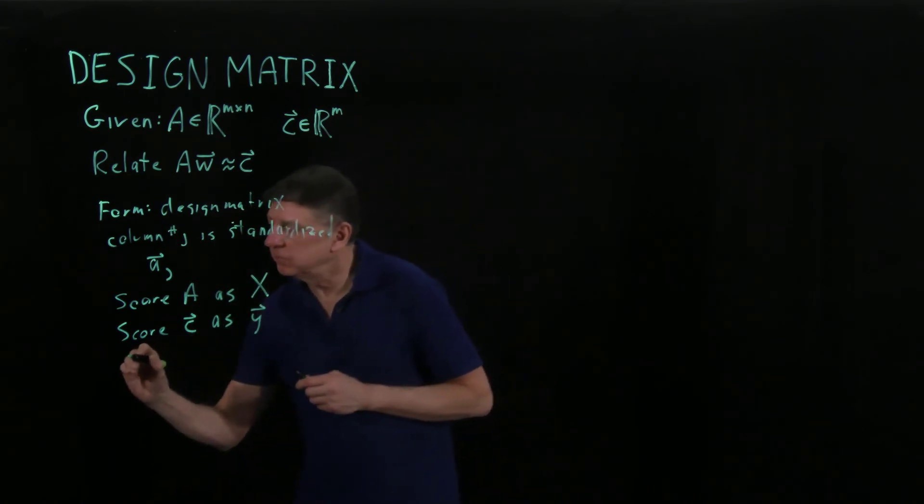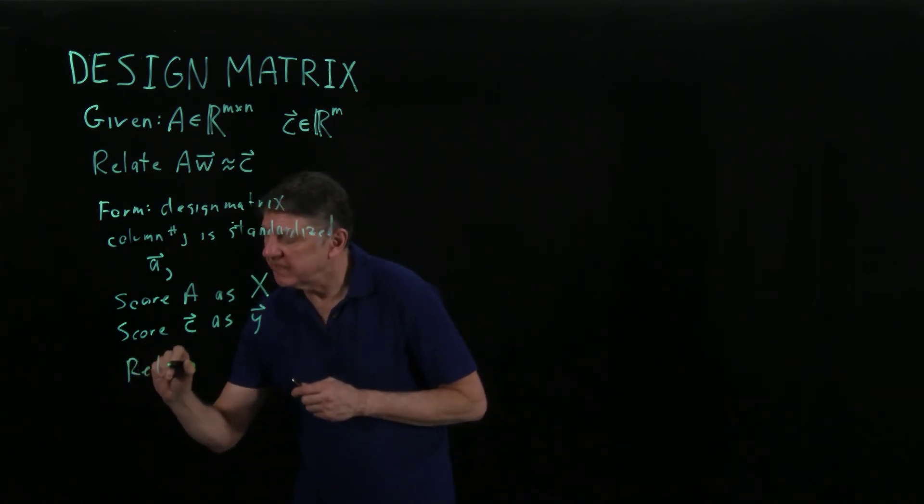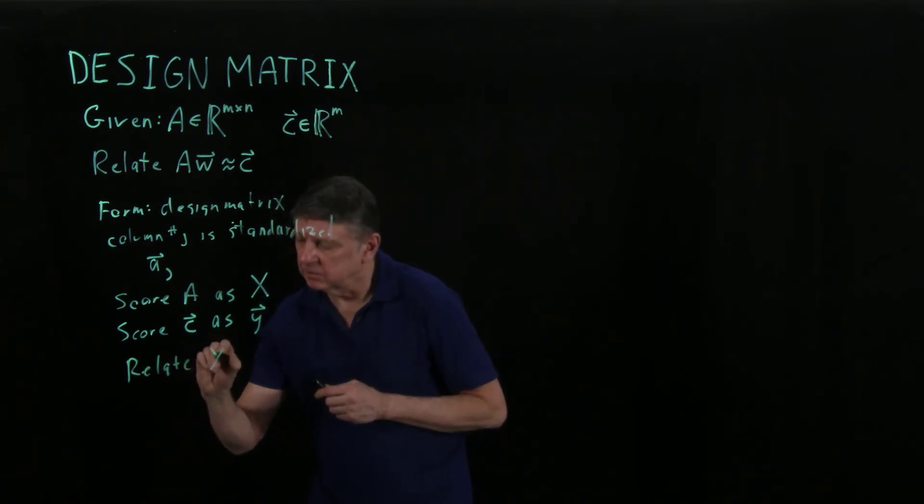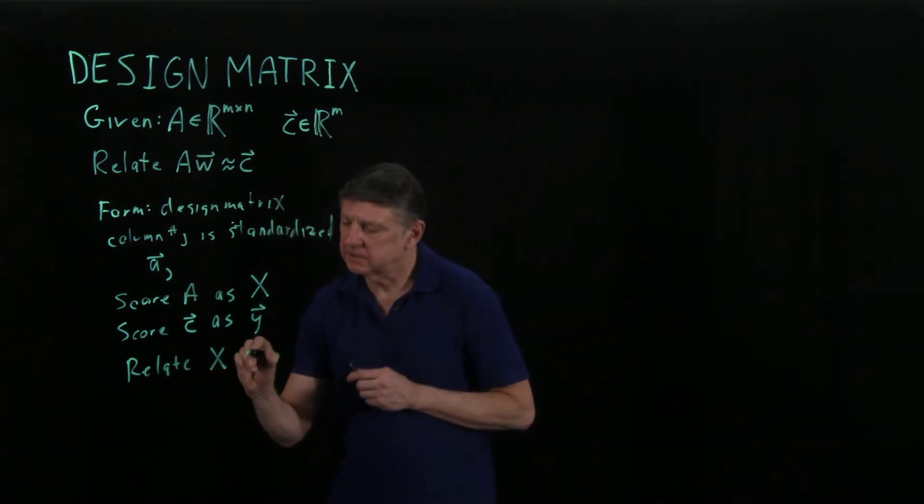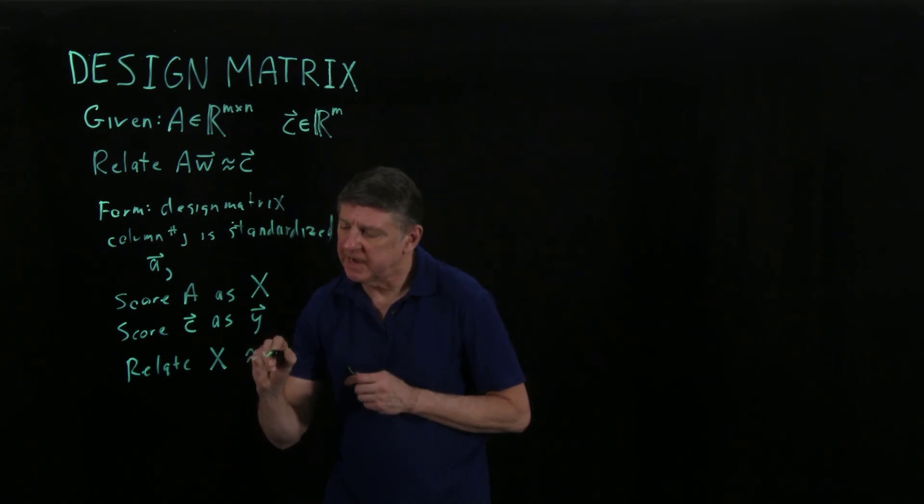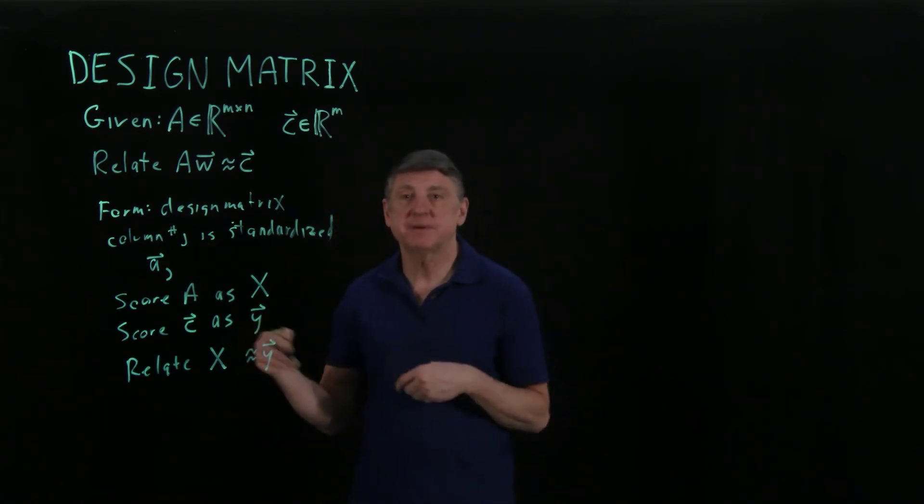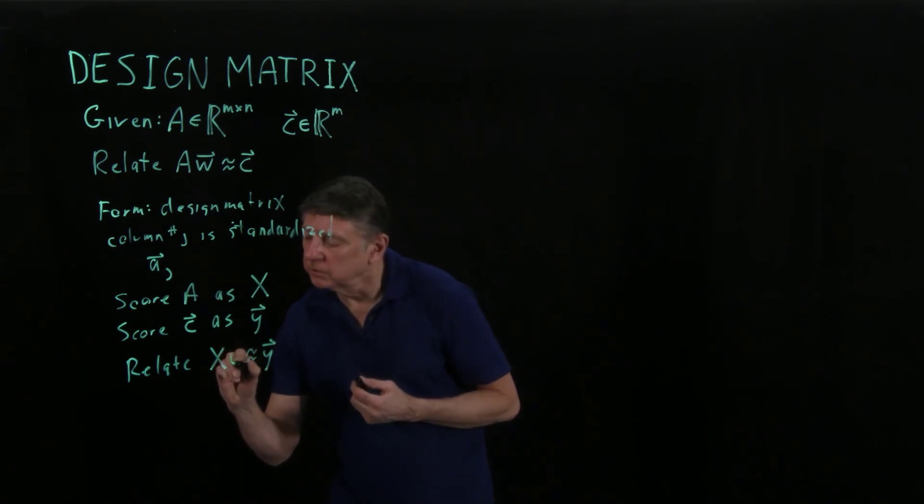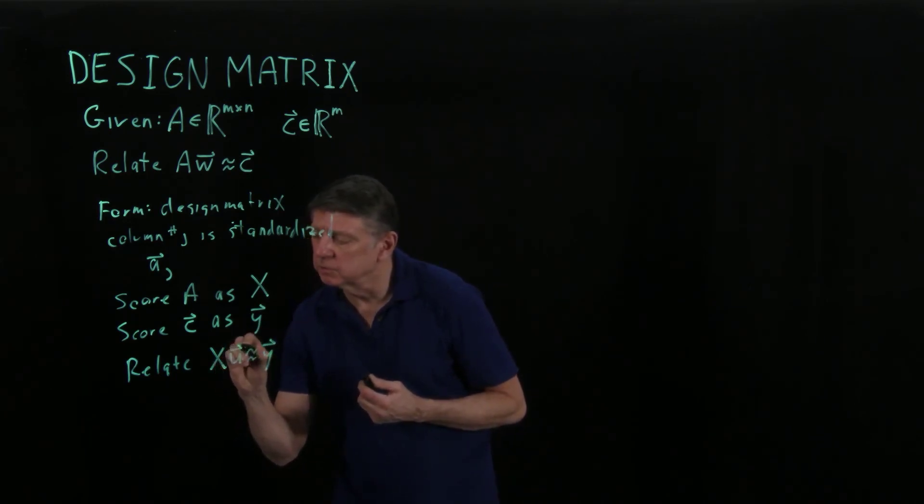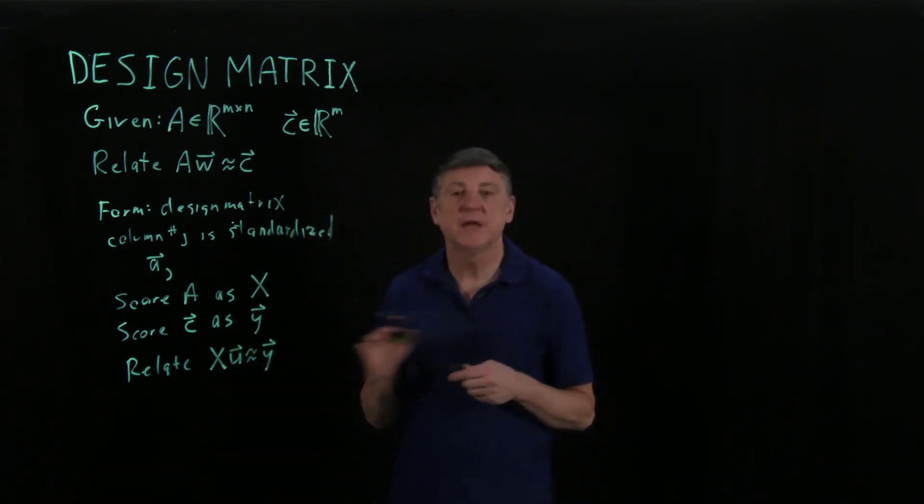So we relate our design matrix X to approximately our scored vector Y, and we have to change variables. We'll refer to this standardized one as U.